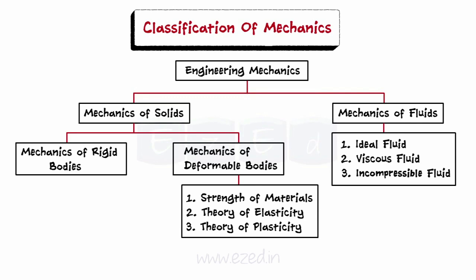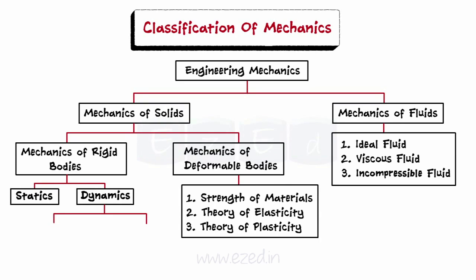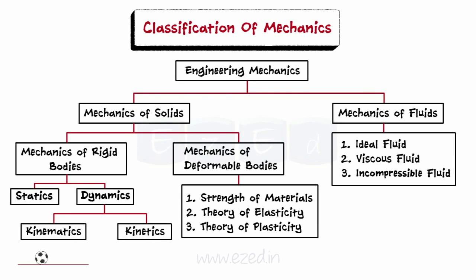In our course, we shall learn only about mechanics of rigid bodies. Rigid body mechanics is further branched into statics, where the state of the body is at rest, and dynamics, where the body is in motion. A building is a static object, whereas a moving car is a dynamic object. Dynamics is further divided into kinematics, in which we do not consider the forces responsible for motion, and kinetics, where we consider the forces responsible for motion. Consider a football rolling on the ground. When we only consider this motion without considering the forces responsible for it, it is called kinematics. On the other hand, if we consider a boy who kicks the ball, thus applying a force, after which the ball starts rolling, it is called kinetics.